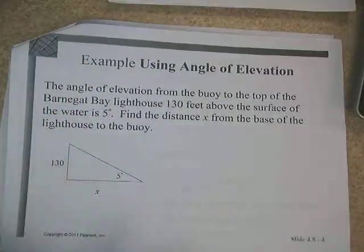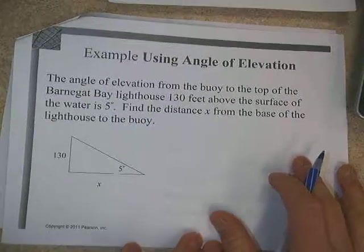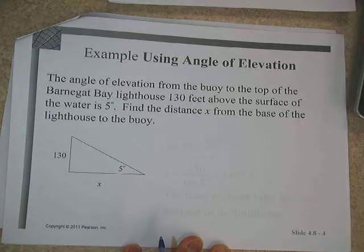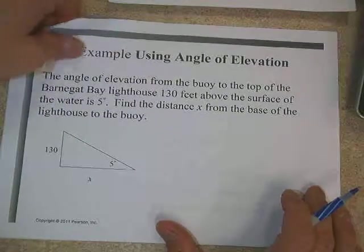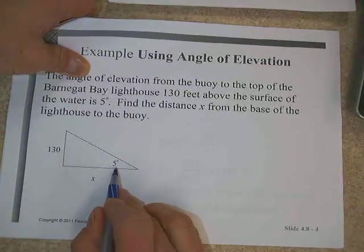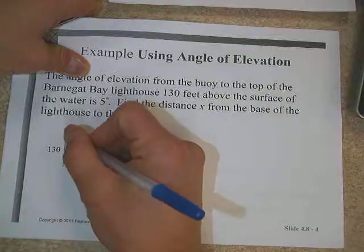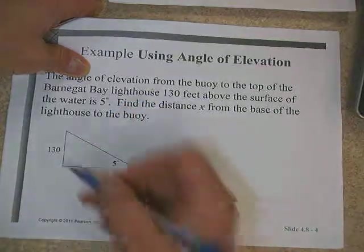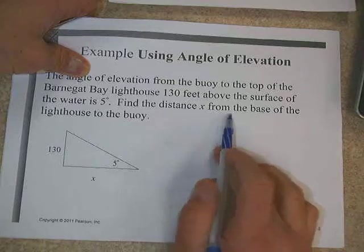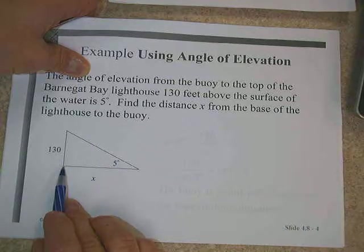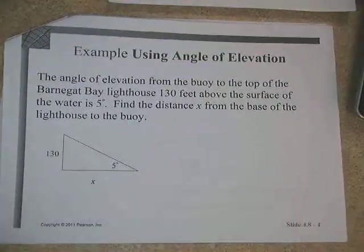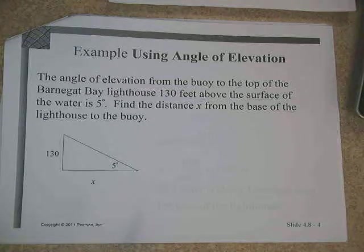All right, so let's take a look at this problem. So the angle of elevation from the buoy to the top of the Barnegat Bay Lighthouse is 130 feet above the surface of the water. It's five degrees. And we want to find the distance from the base of the lighthouse to the buoy. So again, the angle of elevation is always going to be with the horizontal and going up. So that's why this is the five that they mentioned. The lighthouse height they told us is 130 feet. So that's why that is going to be 130 because that's the actual lighthouse here in my picture. And then ultimately we want the distance from the base of the lighthouse. The base of the lighthouse is the bottom. Out to that buoy would be our X. So the key issue for us here today is going to be making sure that we can actually produce this picture.